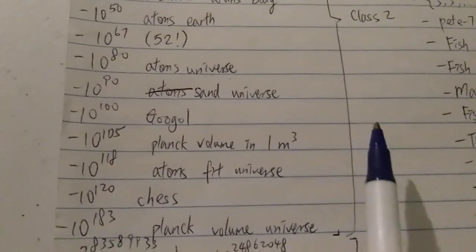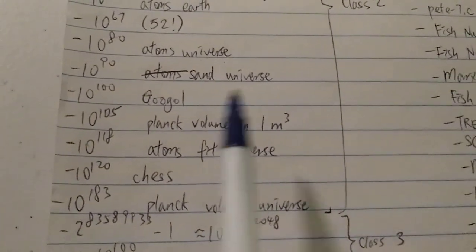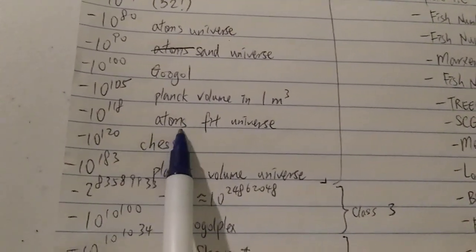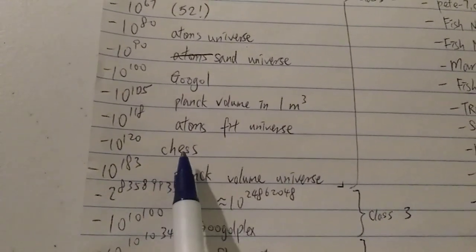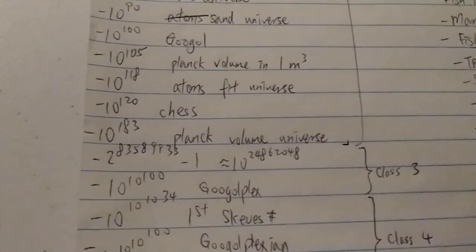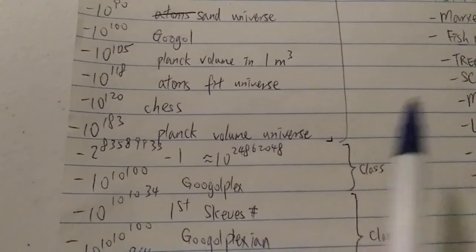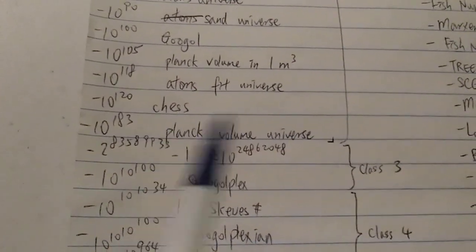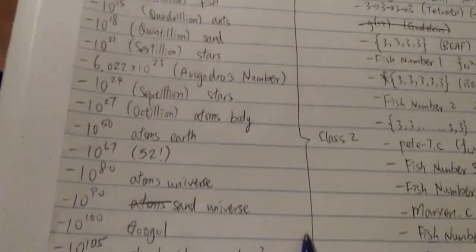10 to the 105 is the Planck volume in a one-meter cube — roughly three feet by three feet by three feet — so there are more Planck volumes in one meter cubed than a googol. Next, 10 to the 118 is around the number of atoms that can fit in the observable universe. 10 to the 120 is around the total number of chess games. And 10 to the 183 is around the total number of Planck volumes in the observable universe, which some say is the biggest physical number in the universe.